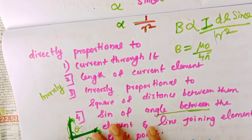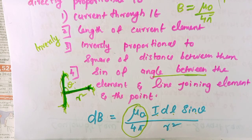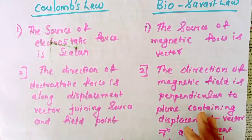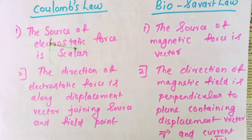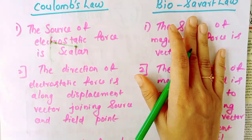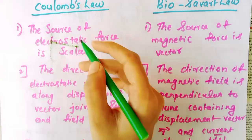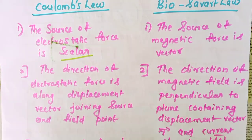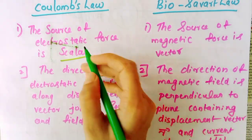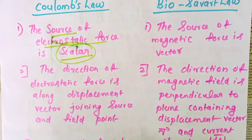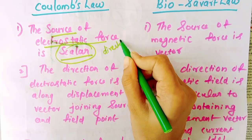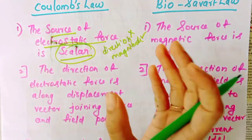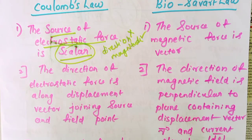Now let's discuss the difference between Coulomb's Law and Biot-Savart Law. In Coulomb's Law, the source of electrostatic force is a scalar quantity. It has only magnitude and no direction. Scalar means no direction — only the magnitude of the value. In Coulomb's Law, we deal with electrostatic force, which is scalar.